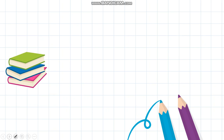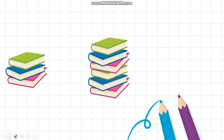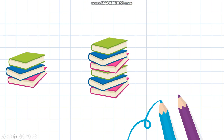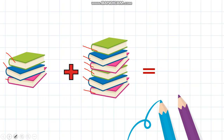Now let's try with more. Here are three books, and here is another set of books. Now can you guess how many books are here? How many? So now let's put our addition sign, the plus sign. Here it is. Now how many books do I have? And the equal sign. How many books do I have all together? Now let's count together: 1, 2, 3, 4, 5, 6, 7, 8, 9. So 3 books plus 6 books makes 9 books.